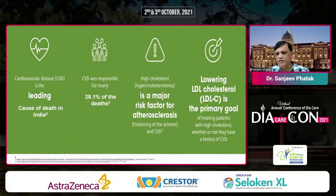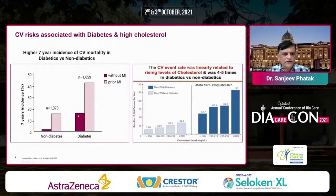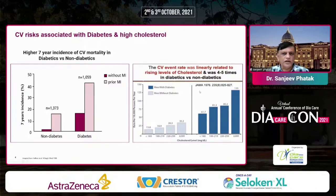Amongst total cholesterol and other lipid levels, LDL has drawn the primary focus, and that is why it is the primary goal to treat LDL to target so as to reduce cardiovascular events in diabetic as well as non-diabetic people. The cardiovascular event rate is linearly related to rising cholesterol levels and is four to five times higher in diabetics versus non-diabetics. This was published in JAMA 1976, when even total cholesterol was considered one of the most important factors responsible for cardiovascular events.